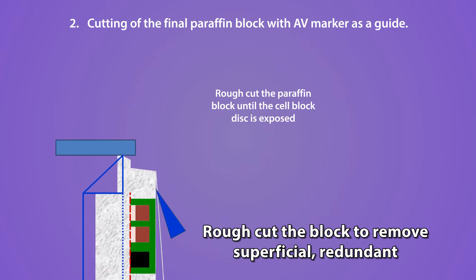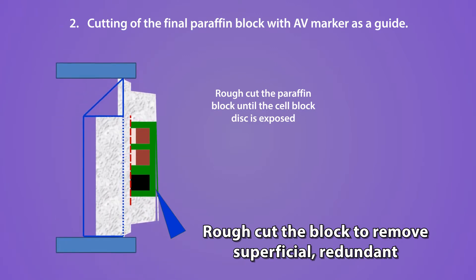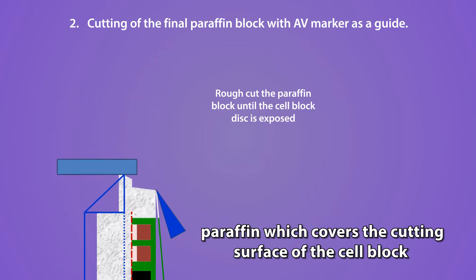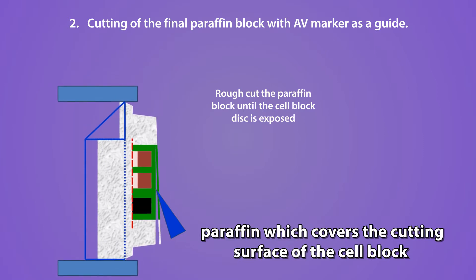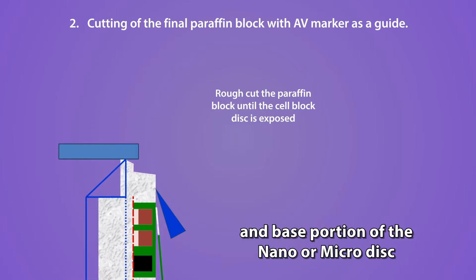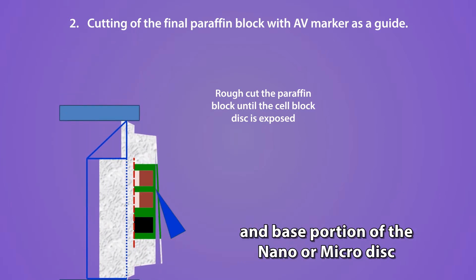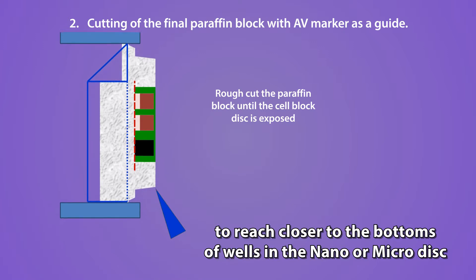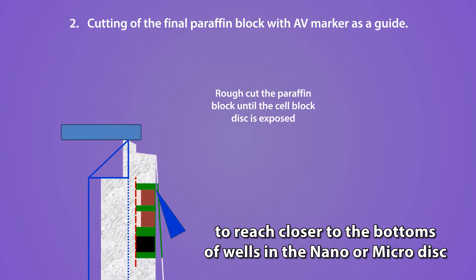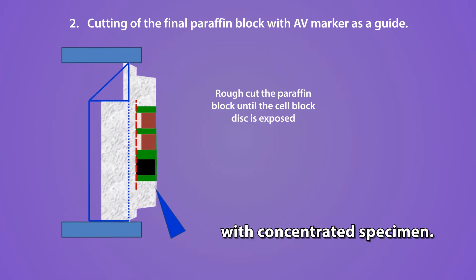Rough cut the block to remove the superficial, redundant paraffin which covers the cutting surface of the cell block and the base portion of the Nano or Micro Disc, to reach closer to the bottoms of the wells in the Nano or Micro Disc with the concentrated specimen.